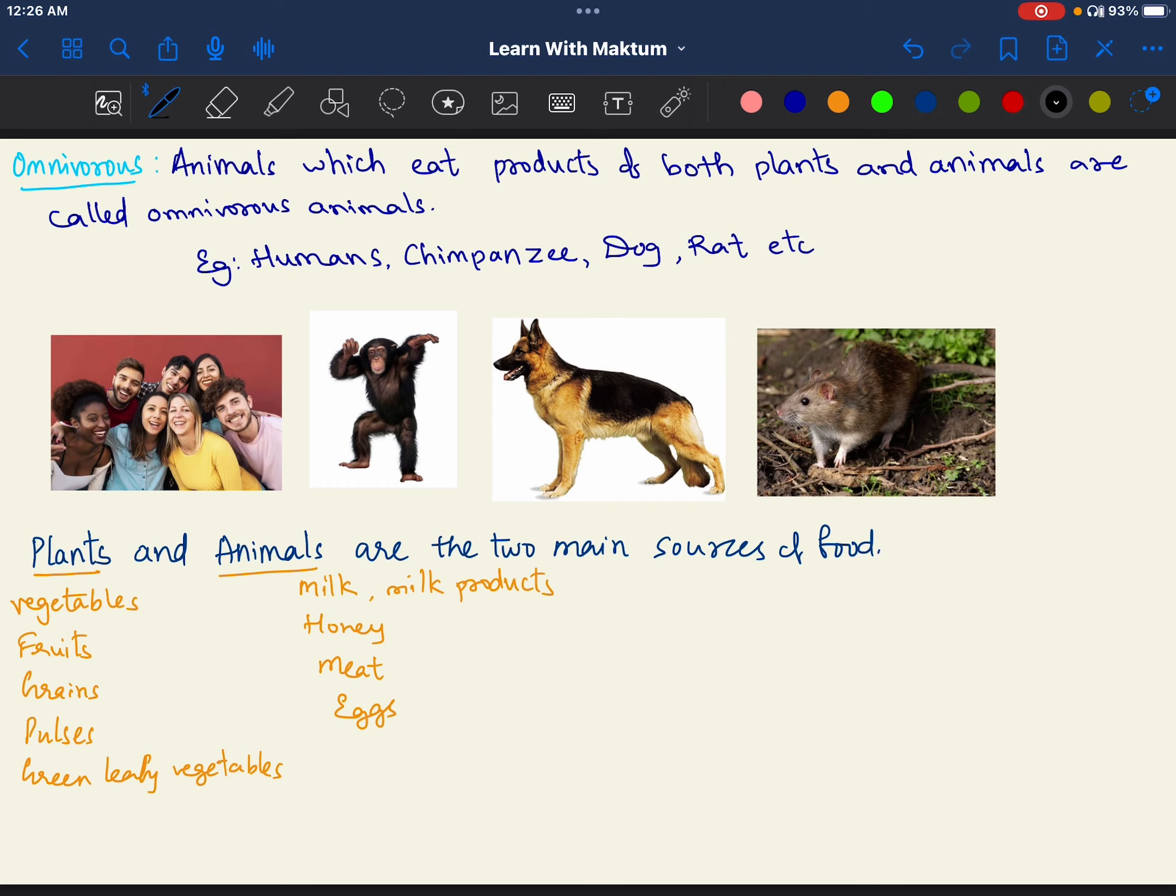Next, there are animals which eat both plants as well as animal products. That type of animals we call them as omnivorous animals. Animals which eat products of both plants and animals are called omnivorous. Example: humans. We eat plants and animals. Chimpanzee, dog, rat are omnivorous animals.